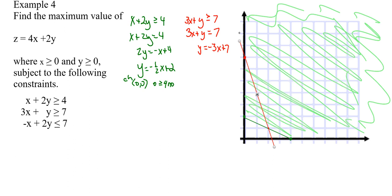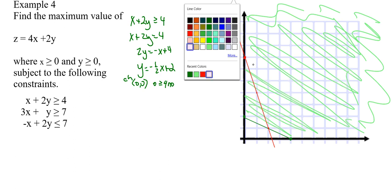I can again try my favorite point, (0, 0). Is 0 greater than or equal to 7? No, (0, 0) is not greater than or equal to 7, so I'm going to shade out this way from there.